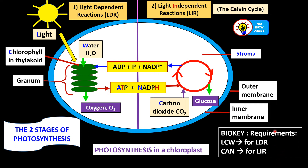As a bio-key to remember: for the light-dependent reactions we need LCW — L for light, C for chlorophyll, W for water. For the light-independent reactions we need CAN — C for carbon dioxide, A for ATP, N for NADPH. Together the requirements are 'LCW CAN' — LCW can win the match. This helps you remember the requirements for both stages of photosynthesis.